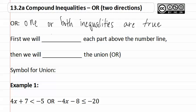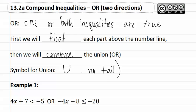First, we are going to float or draw each part right above the number line. Then we are going to combine them. The symbol for a union is a big U shape, but there is no tail — you never put a tail on the union. It is more of a horseshoe.